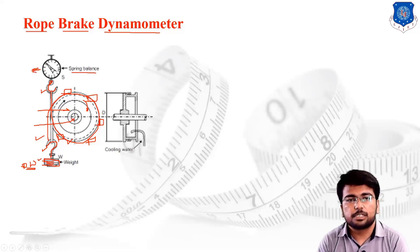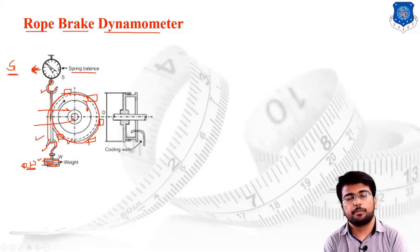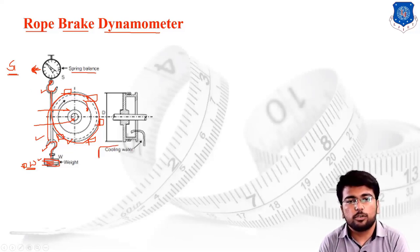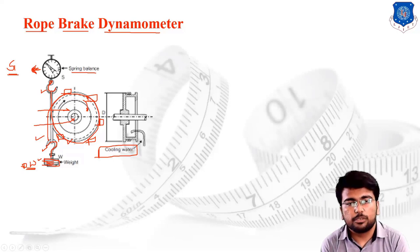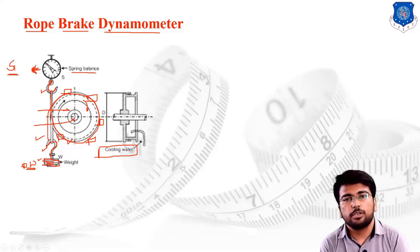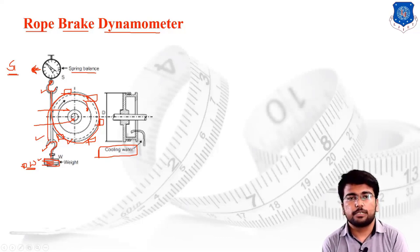In the ideal condition, the spring scale shows a reading S1, which is the basic or dead weight reading available when the system is not in operation. We also need to provide a cooling water arrangement, because in an absorption type dynamometer, increasing resistance generates friction, which converts directly into heat. Using rope and wooden blocks makes it very necessary to cool the system down.